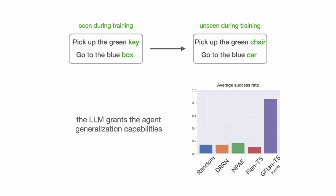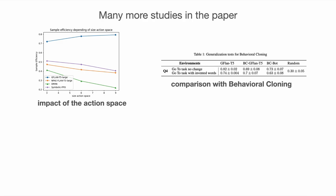These generalization capabilities suggest that the agent has functionally grounded the symbols that describe the geometry of the environment. Many more studies are done in the paper.